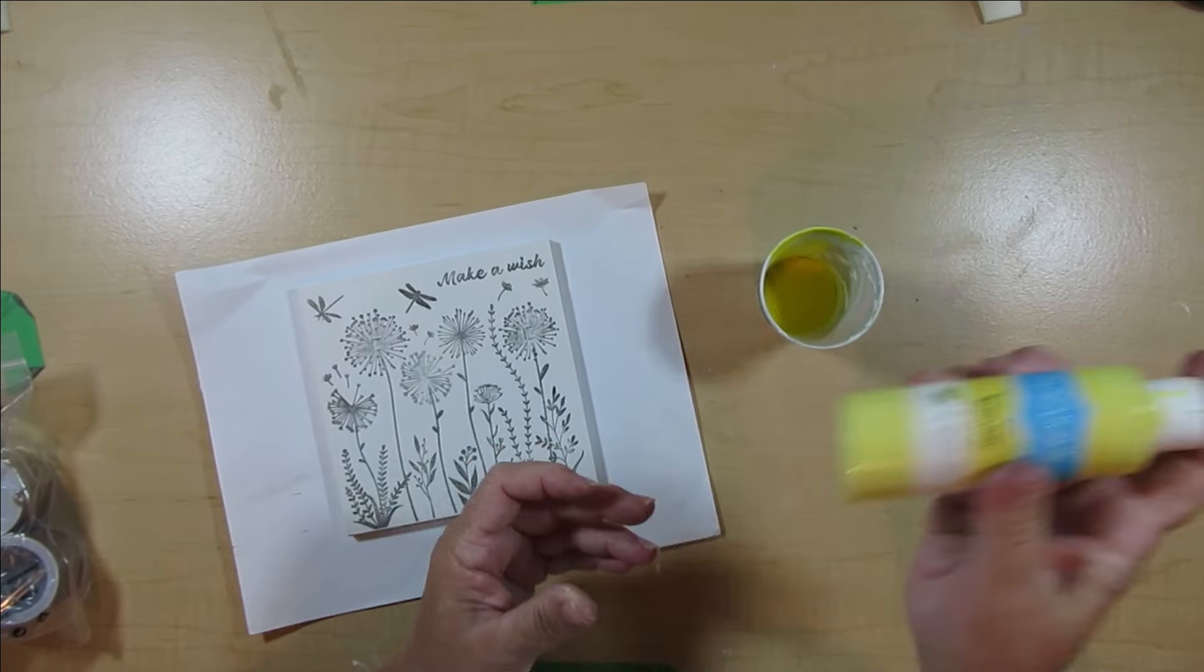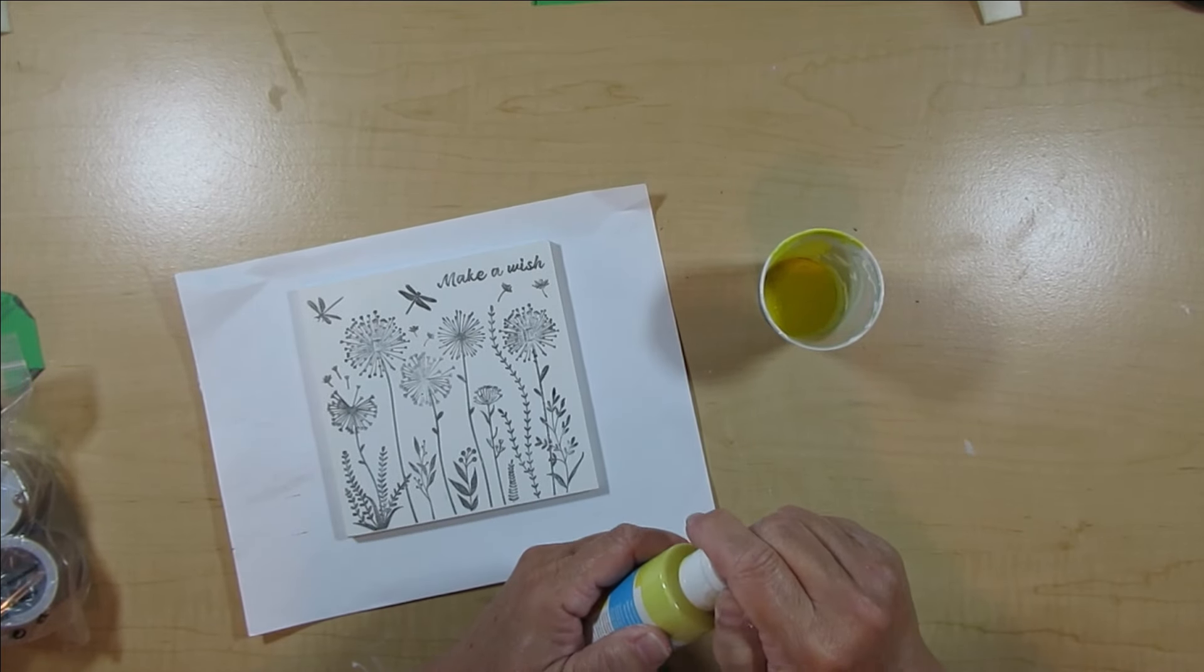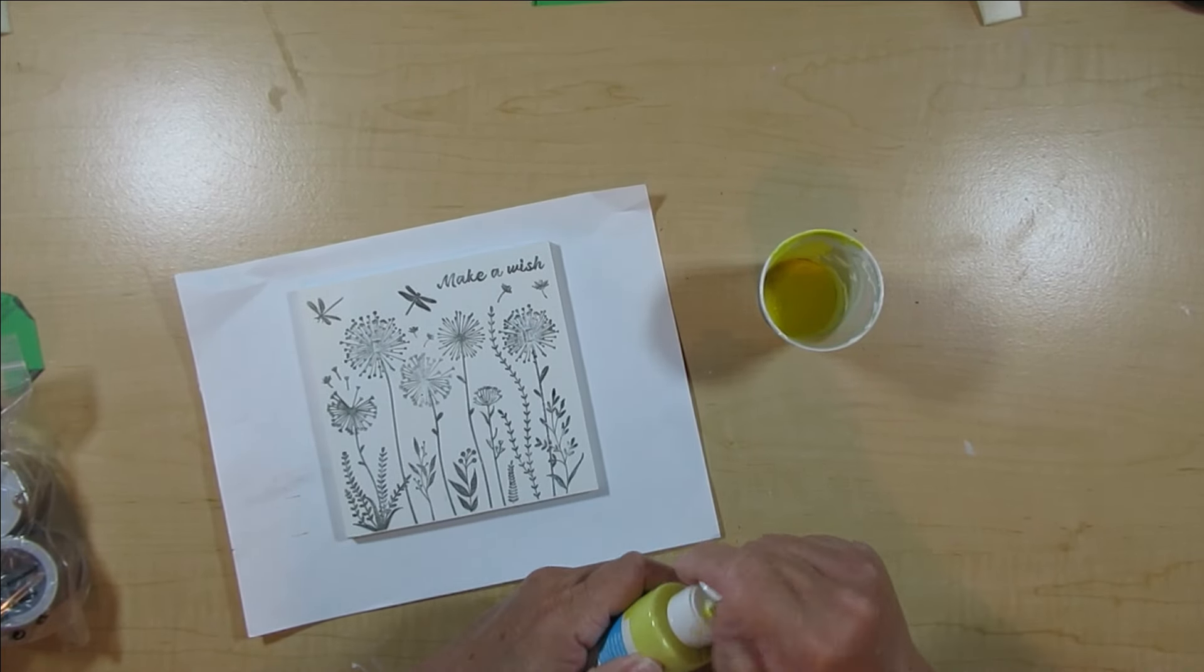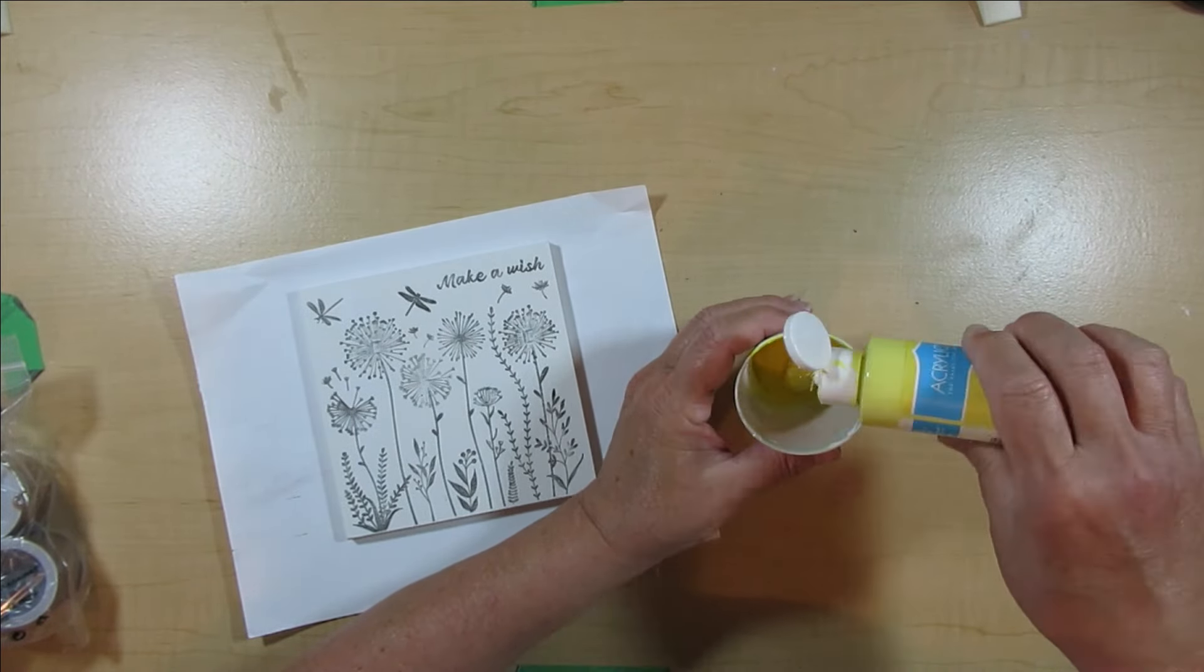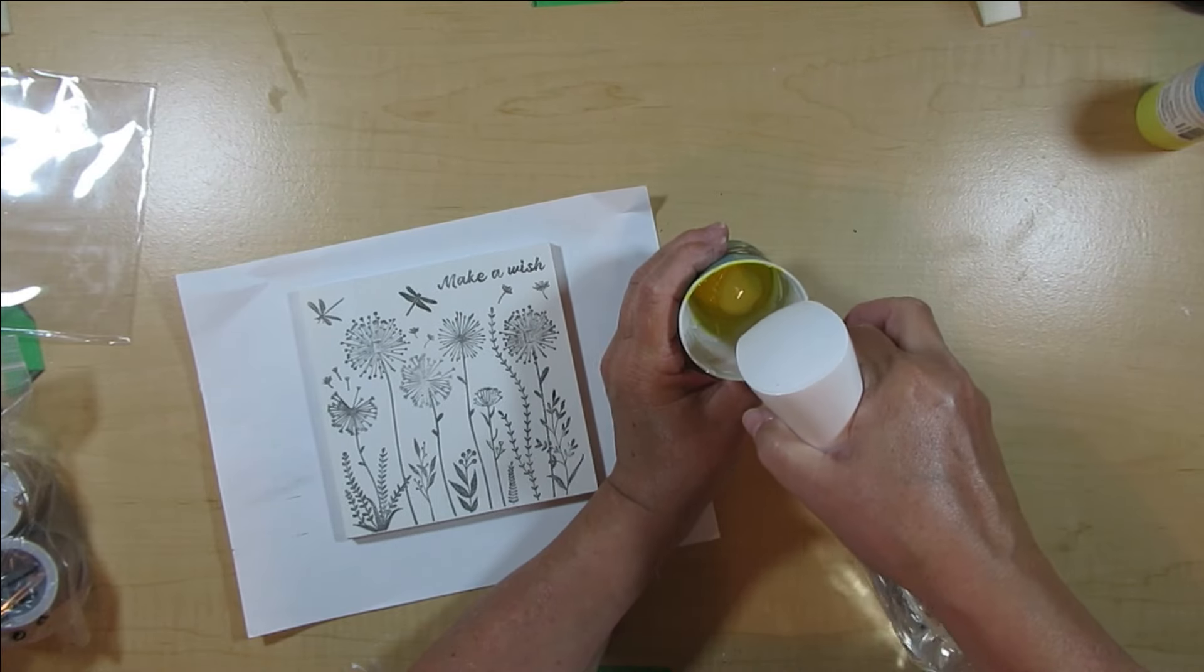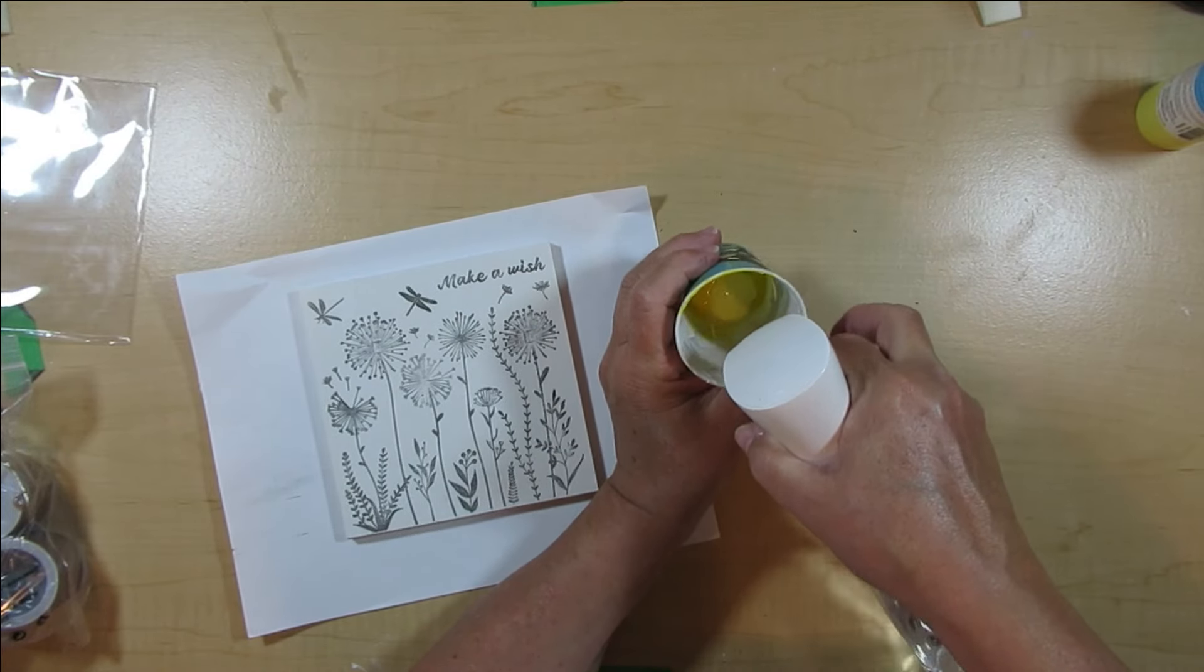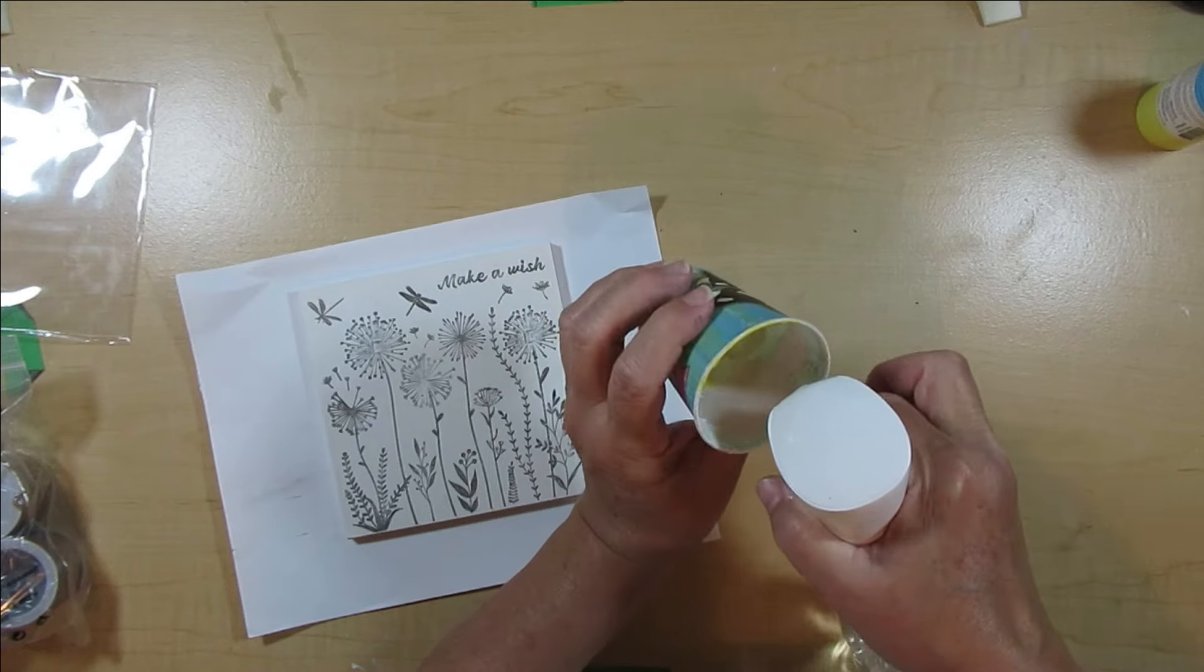To give this sweet little sign a little bit of color and make it look a little bit more interesting than just the black and white, I'm adding a little bit of this lemon yellow acrylic paint into a little cup. I'll add some water with my mister and then just stir it up so it's just a little bit watered down.